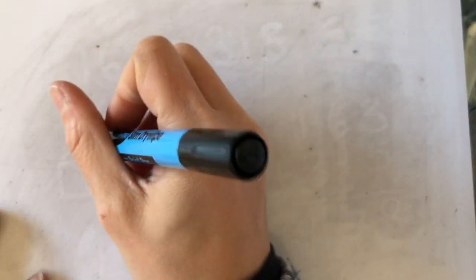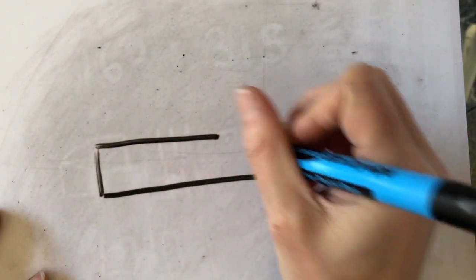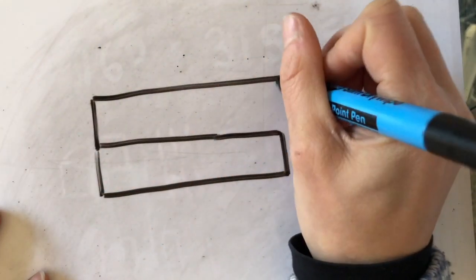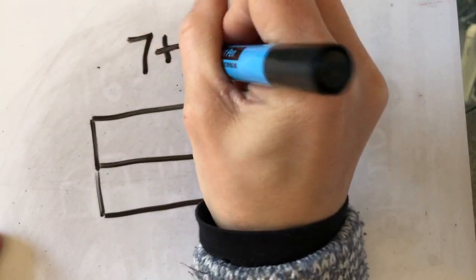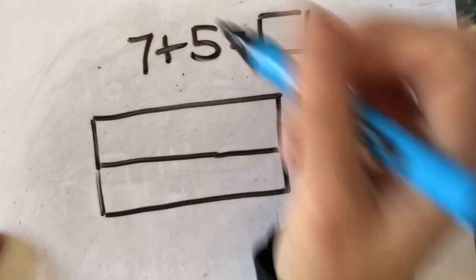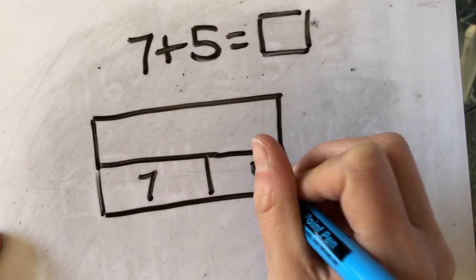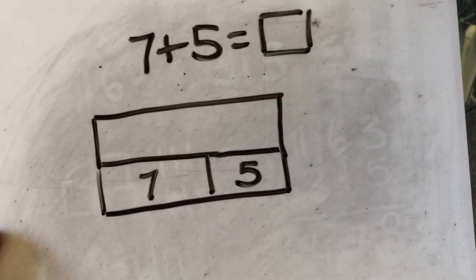it's the idea that you've got a bar, two bars that go together. So if I was to do 7 add 5 and we're trying to work out what it is, we're adding two values, 7 add 5, and they give us our total.